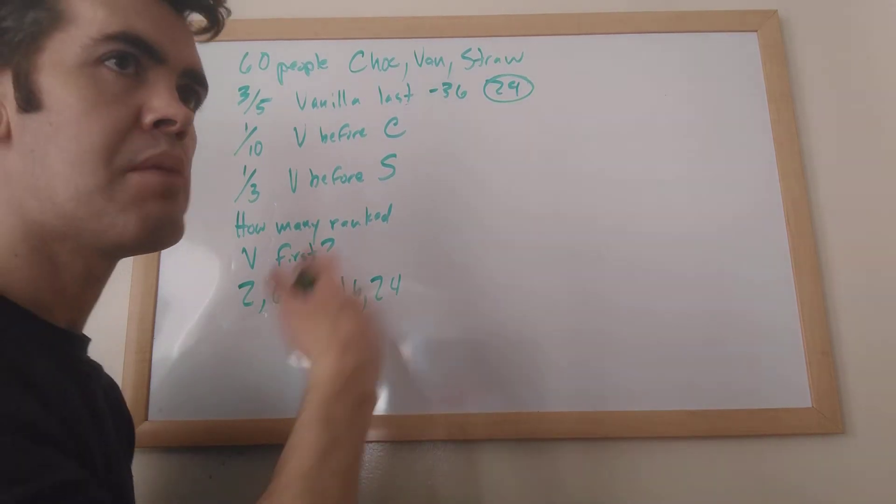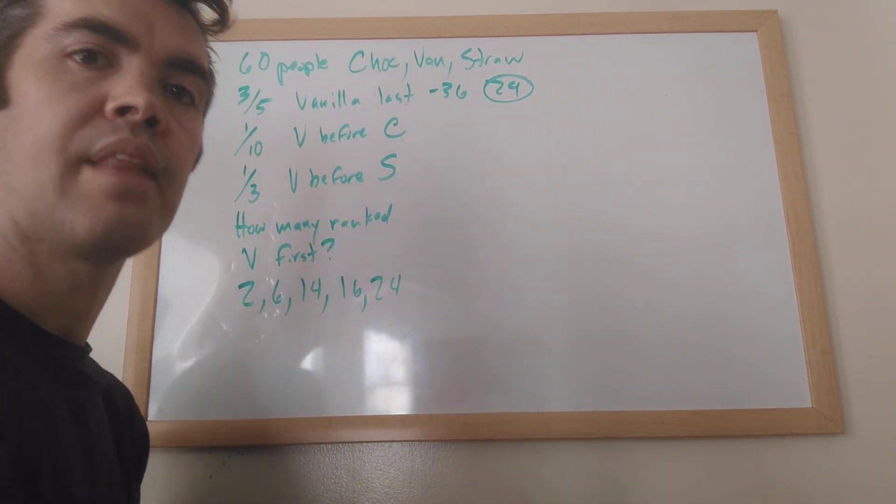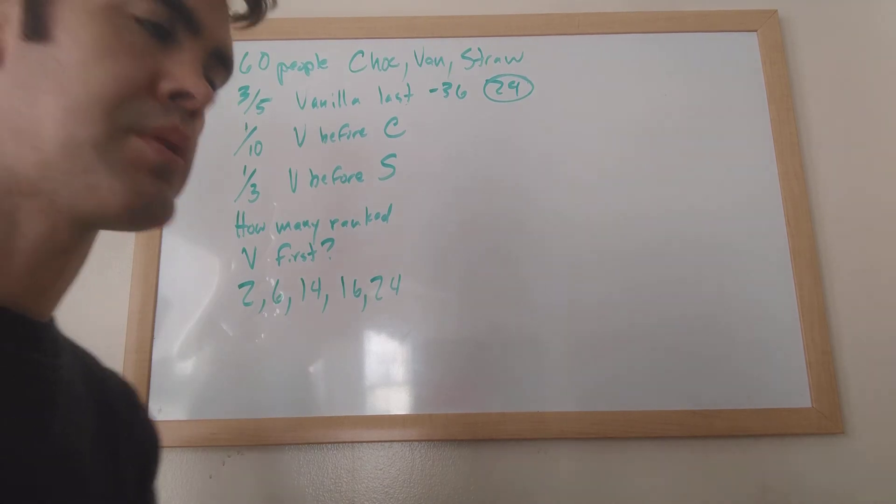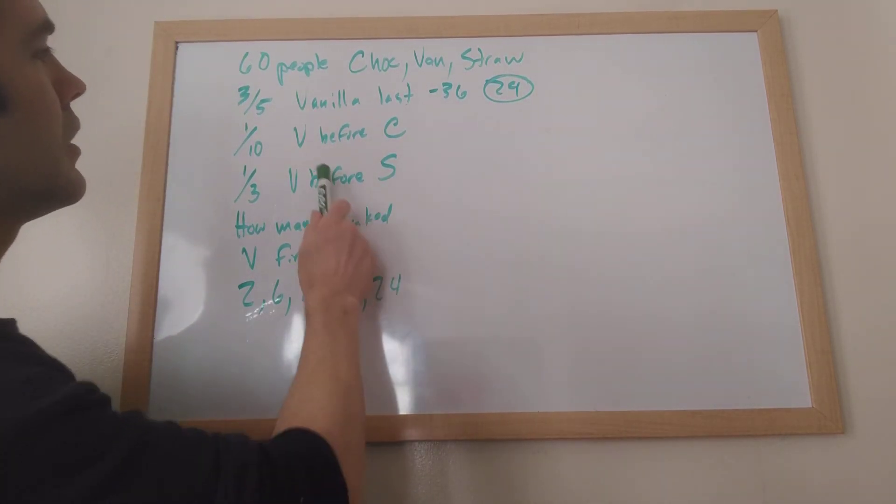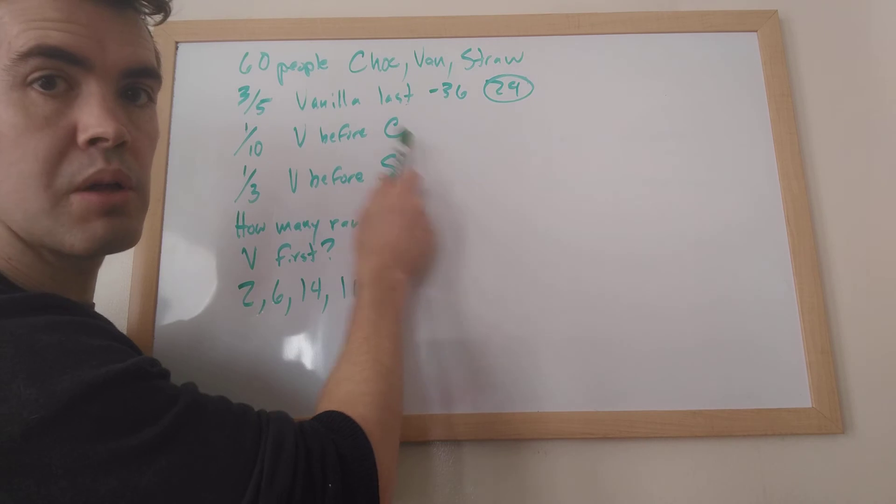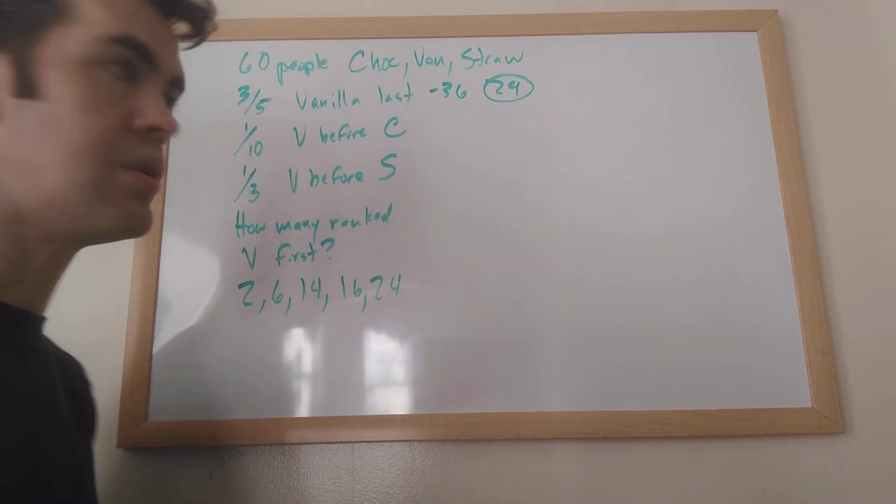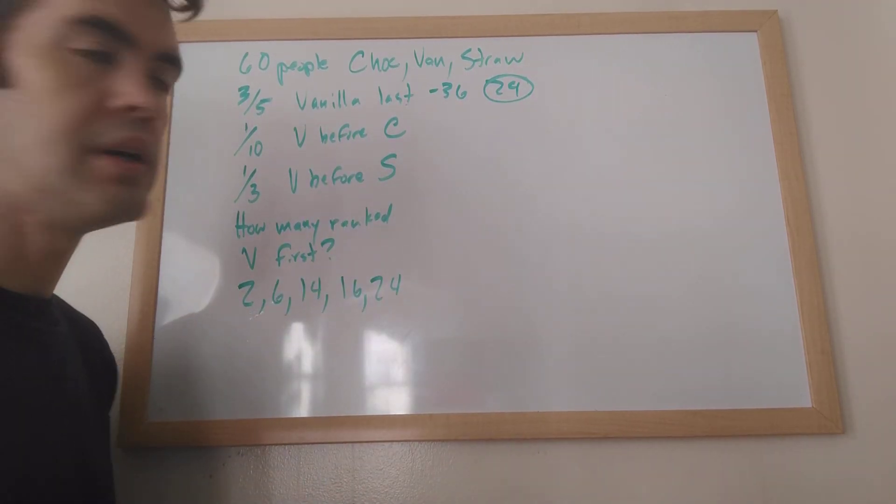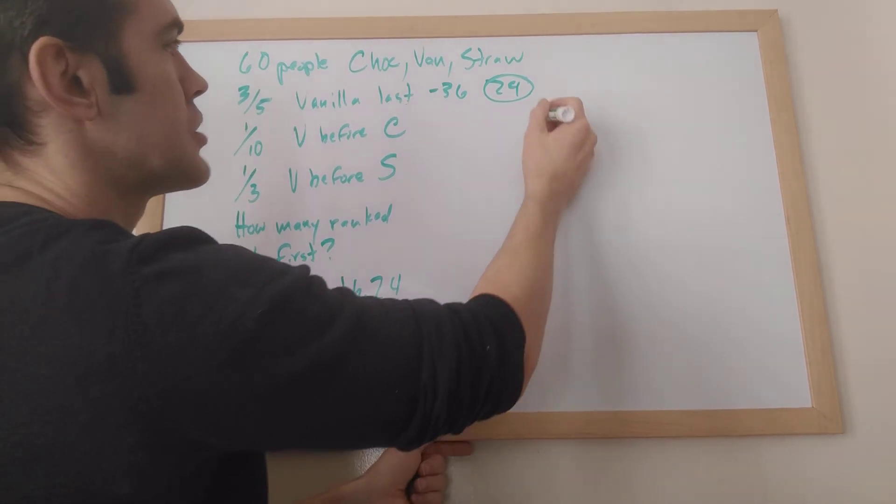But if you've ever got a binary choice where you can do this or that, then that can be a double overlapping set. So what's the binary choice here? Vanilla before chocolate or chocolate before vanilla. That's what you can do and you can do both of these at the same time if you want. So that's, I think, the hardest part of this problem.